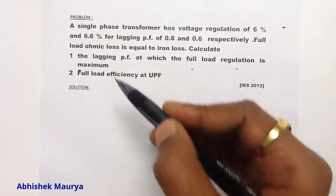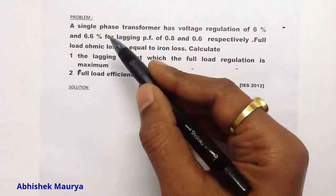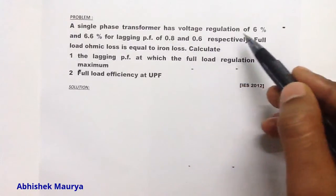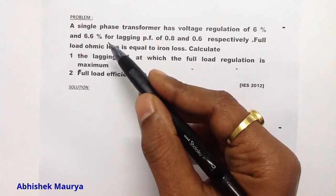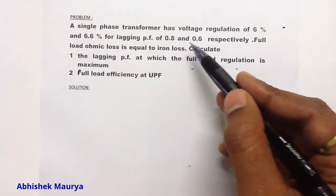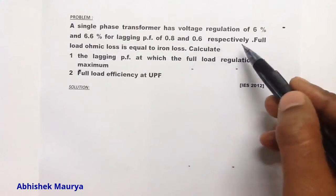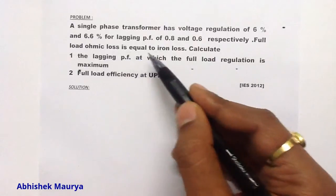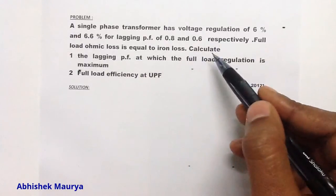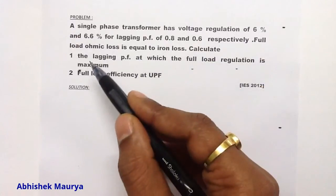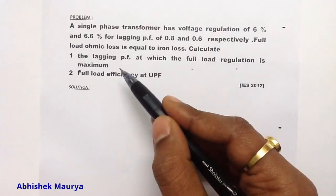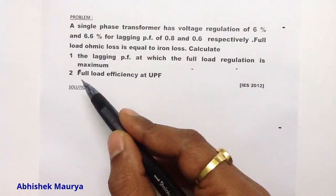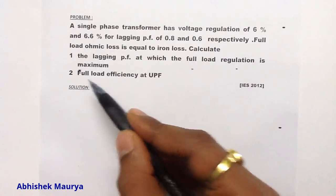Let me first read this question. A single-phase transformer has voltage regulation of 6% and 6.6% for lagging power factors of 0.8 and 0.6 respectively. Full load ohmic loss is equal to iron loss. Calculate the lagging power factor at which the full load regulation is maximum. In the second part we have to calculate the full load efficiency at unity power factor.